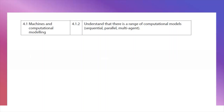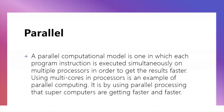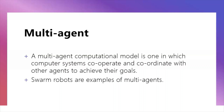Section 4 covers machines and computational models. There are three models to understand. A sequential model executes instructions one after another — Python programs are sequential. A parallel model executes instructions simultaneously on multiple processes using multi-cores, which is why supercomputers are getting faster. A multi-agent model involves computer systems cooperating with other agents to achieve goals — swarm robots are an example. Make sure you know the differences between all three.